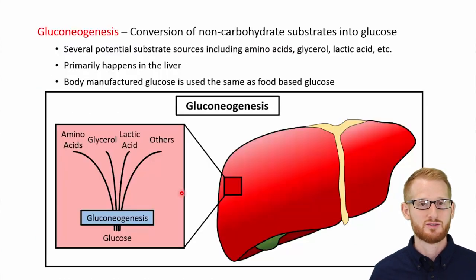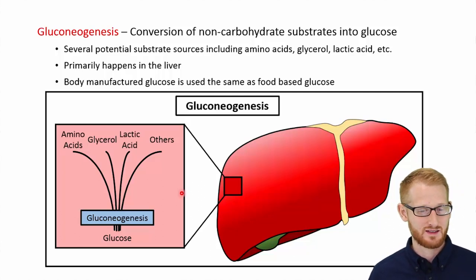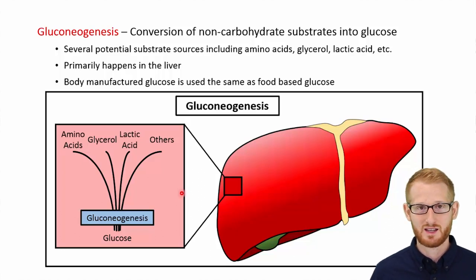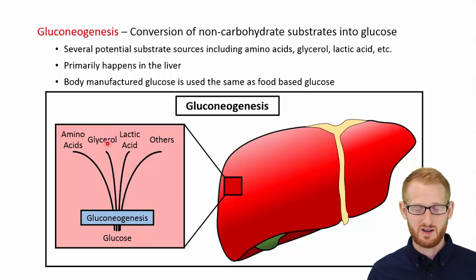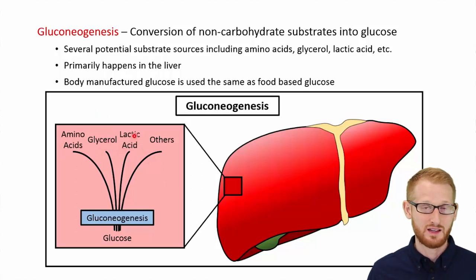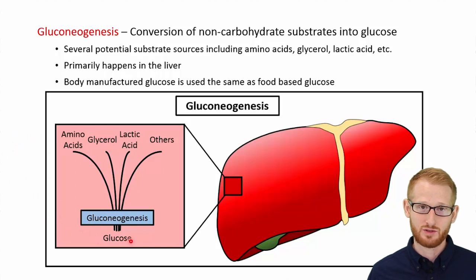Our bodies also have the ability to produce carbohydrates from fats, proteins, or other things the body breaks down, like lactic acid. That process is called gluconeogenesis. Essentially, you're taking amino acids, glycerols pulled out of fats and triglycerides, lactic acid, and other things, and going through gluconeogenesis to create glucose.